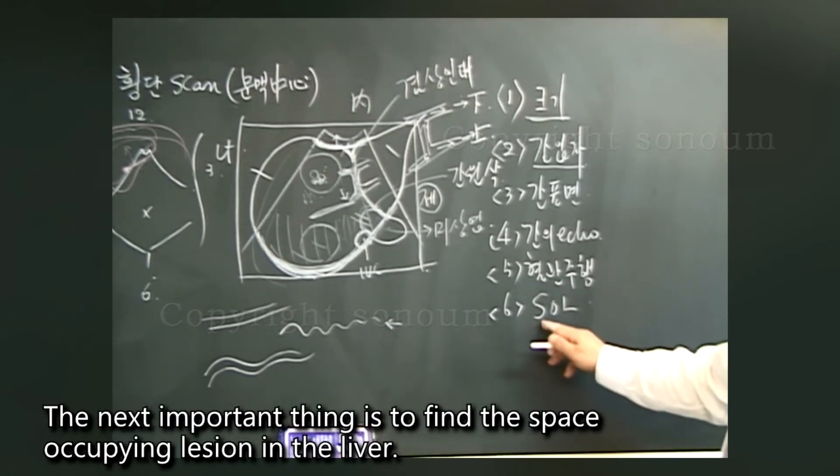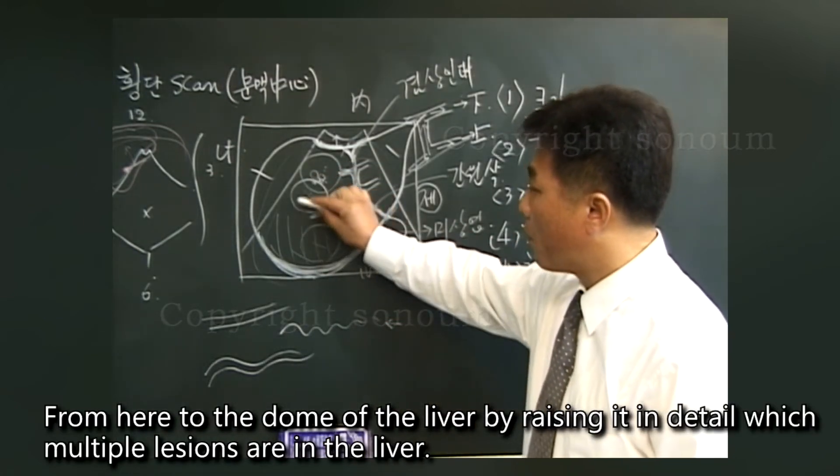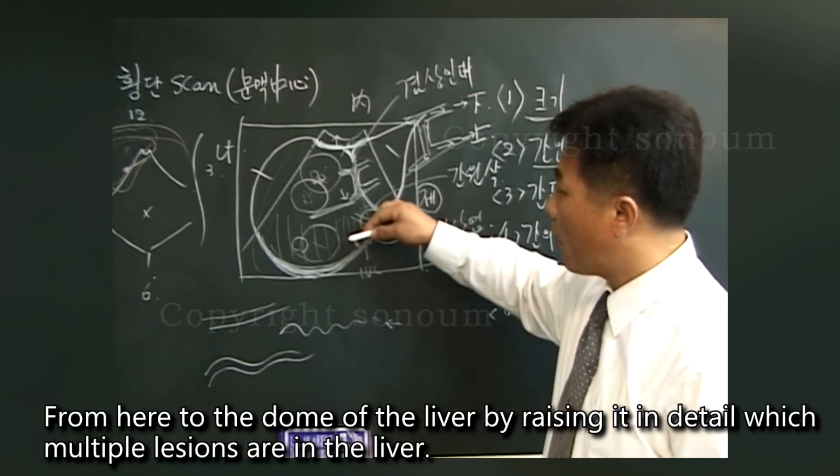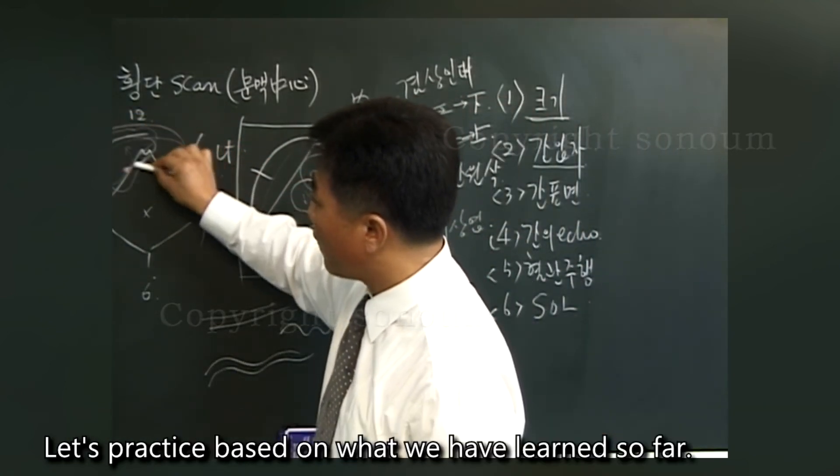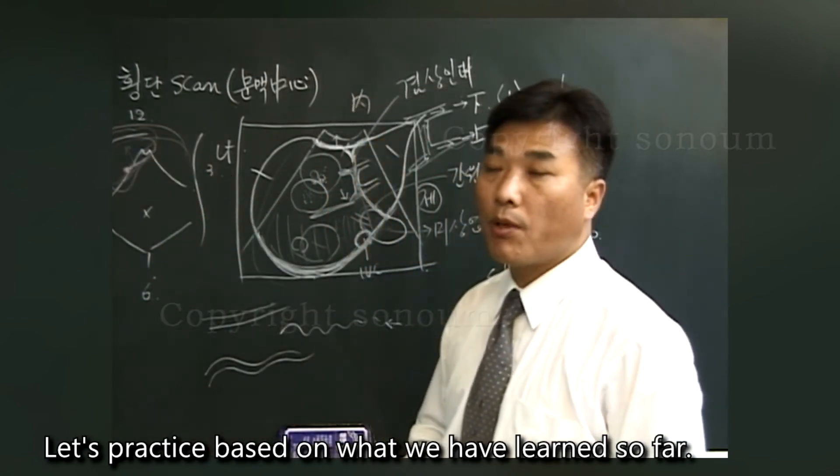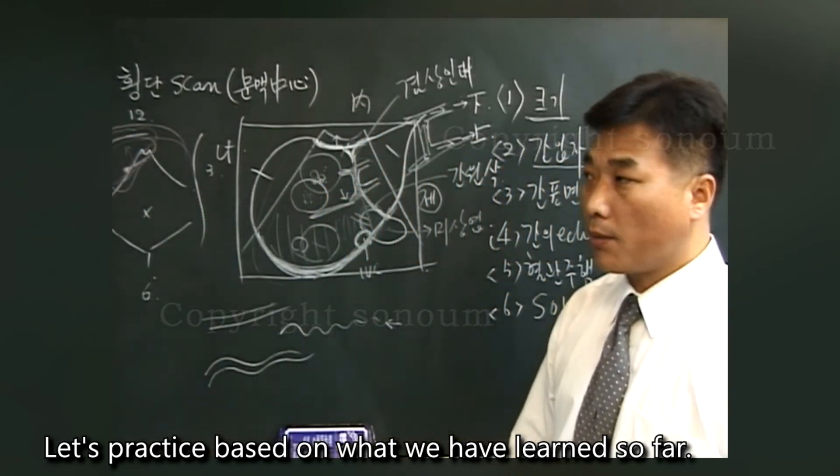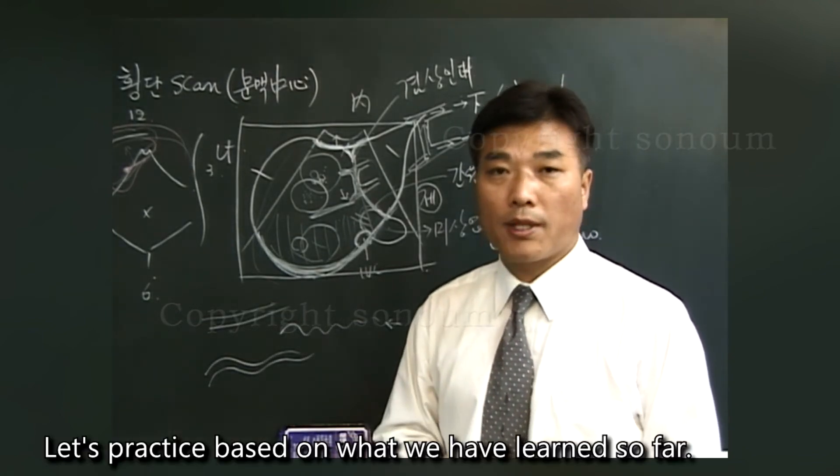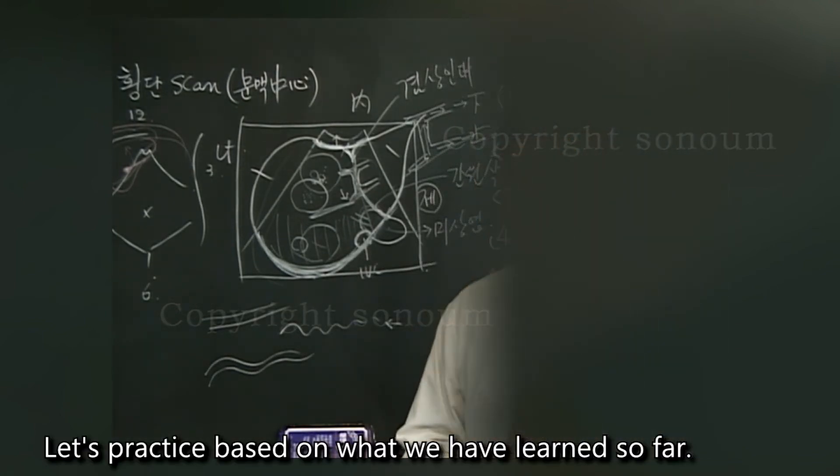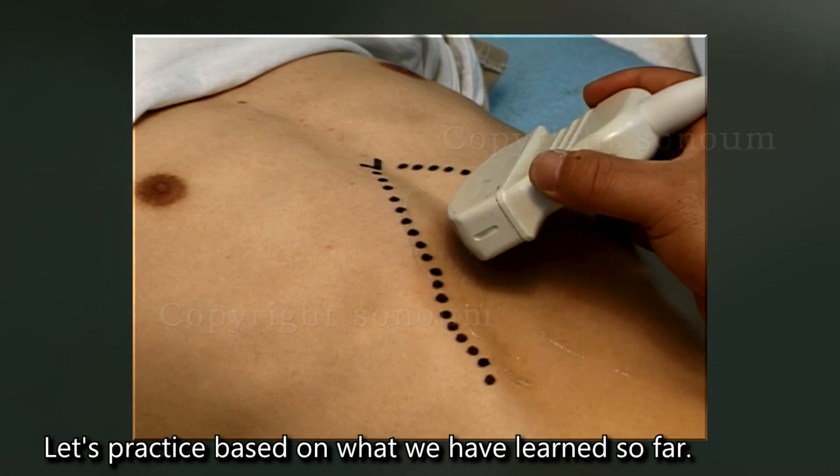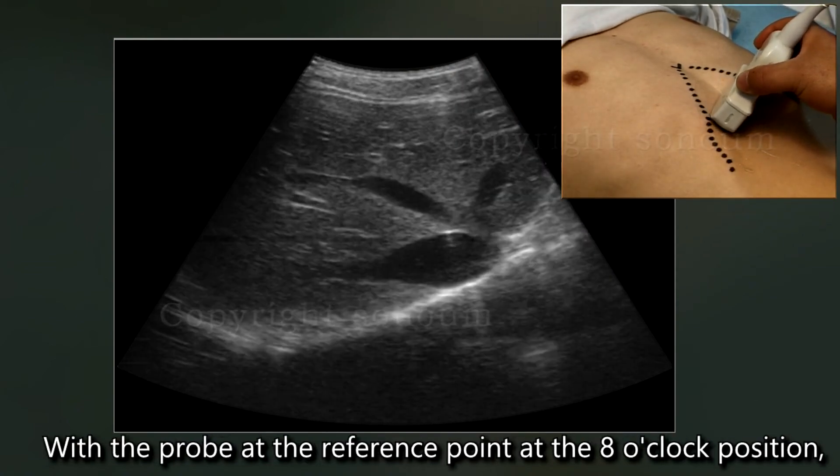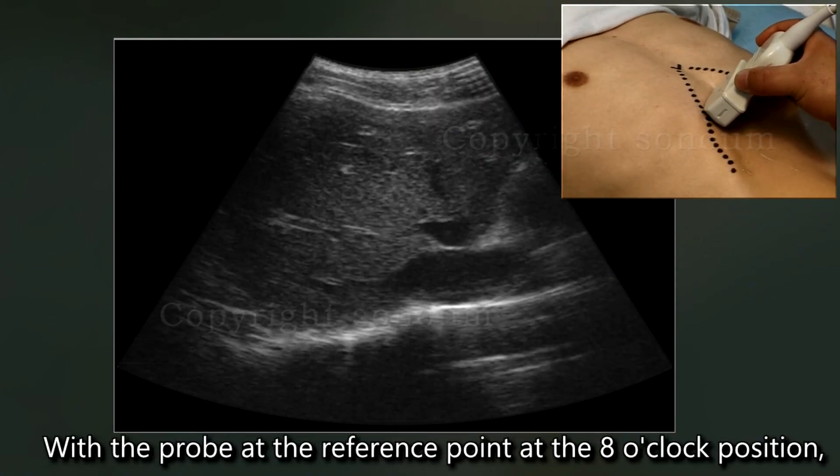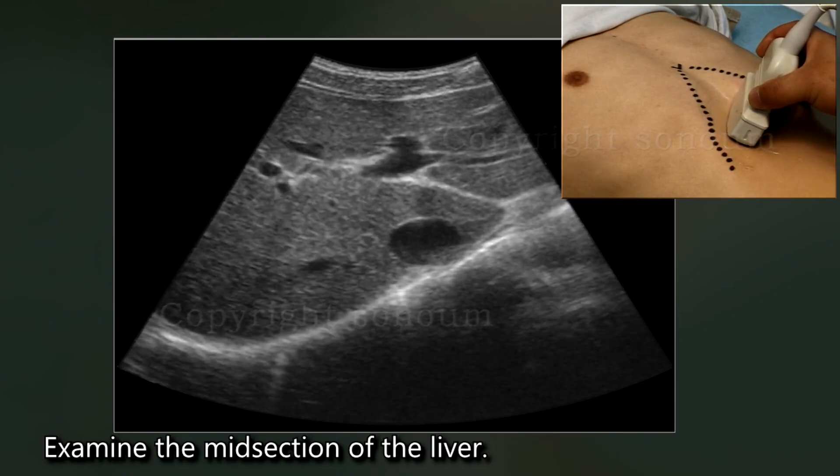The next important thing is to find the space-occupying lesion in the liver. From here to the dome of the liver by raising it in detail, which multiple lesions are in the liver. It's important to take a good look at the lower part of the liver and see what kind of tumor it is. Let's practice based on what we have learned so far. Perform a central transverse scan centered on the portal vein. With the probe at the reference point at the 8 o'clock position. Examine the midsection of the liver.